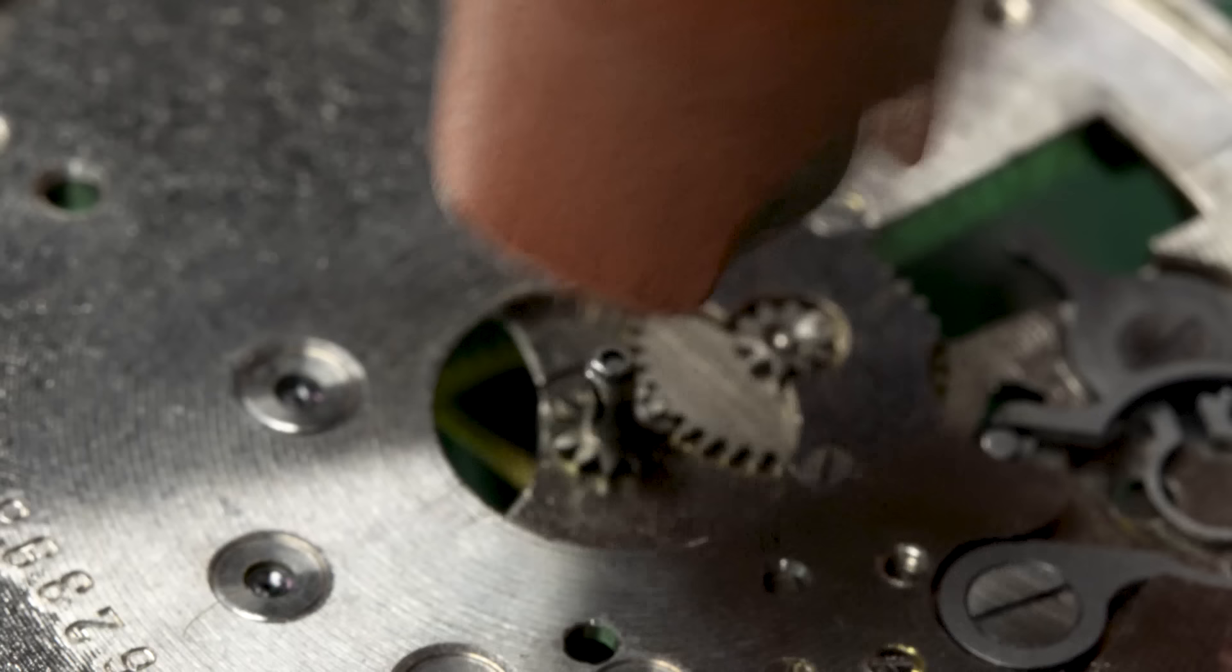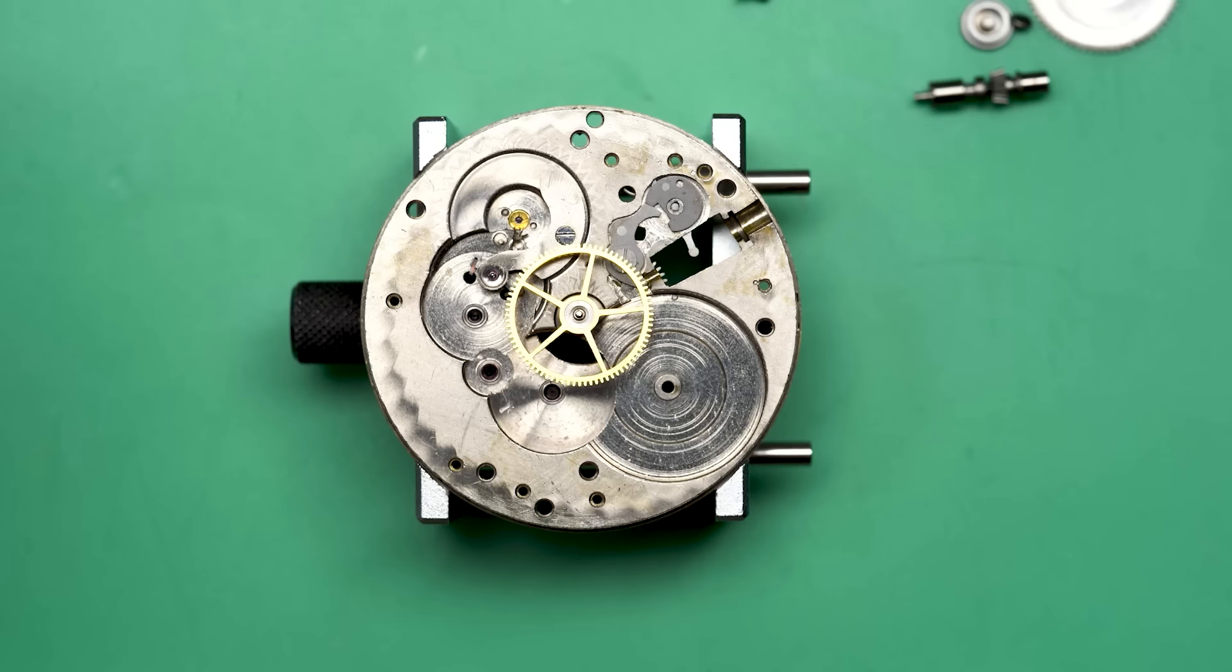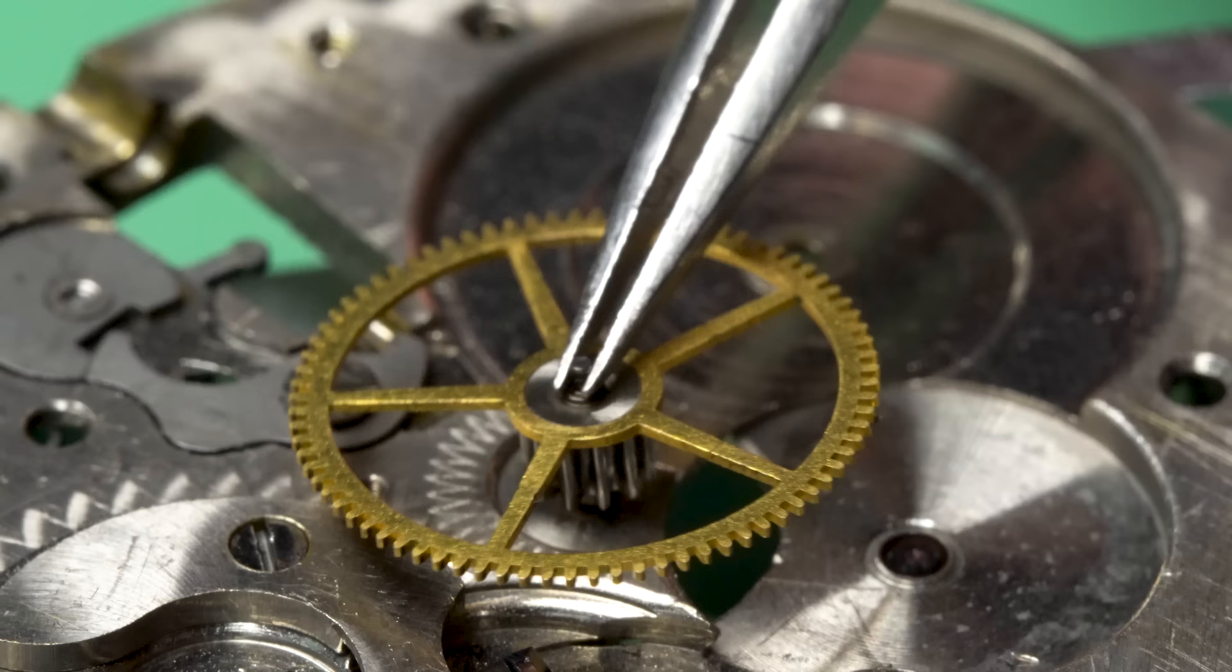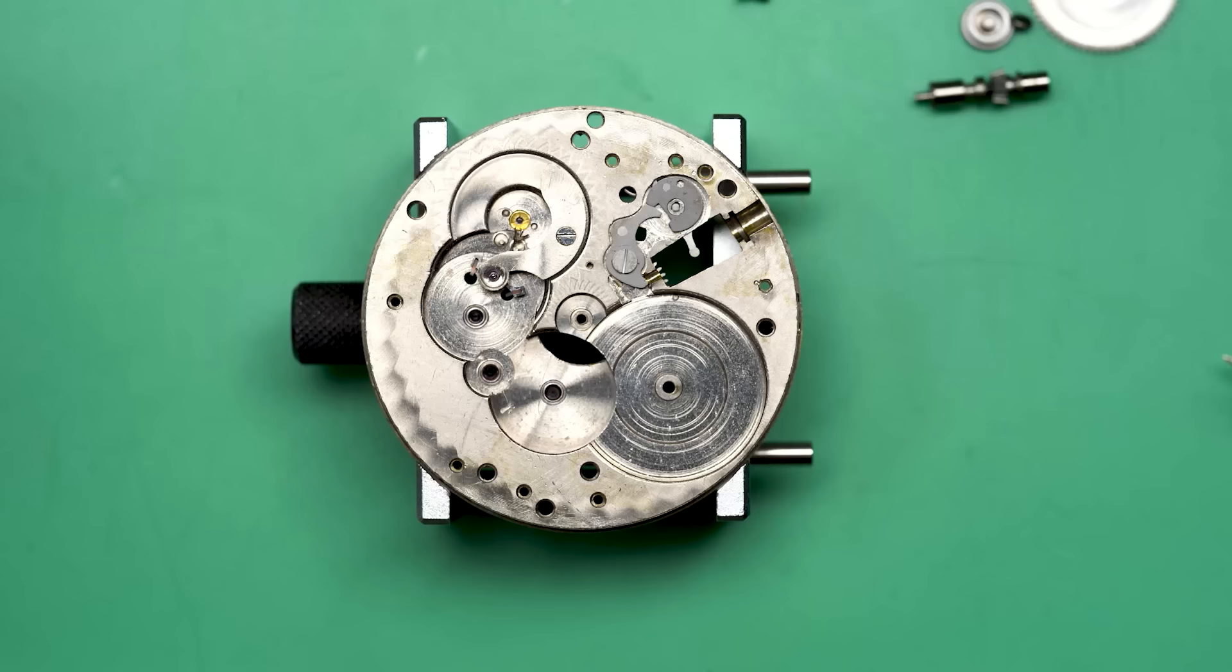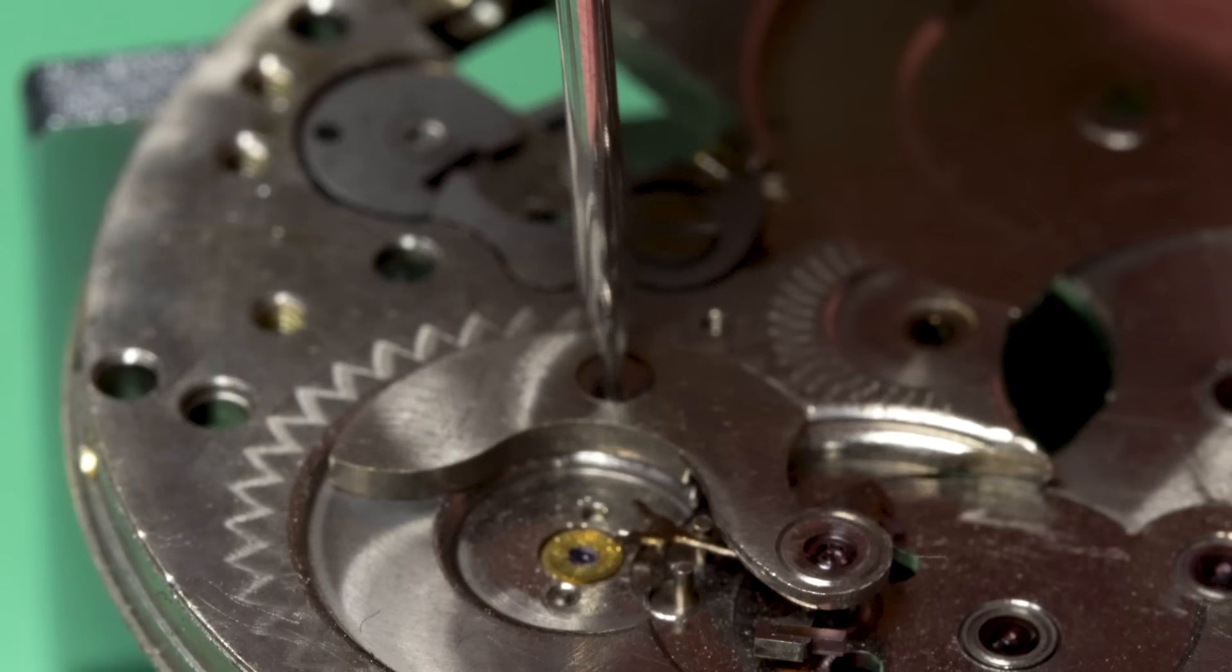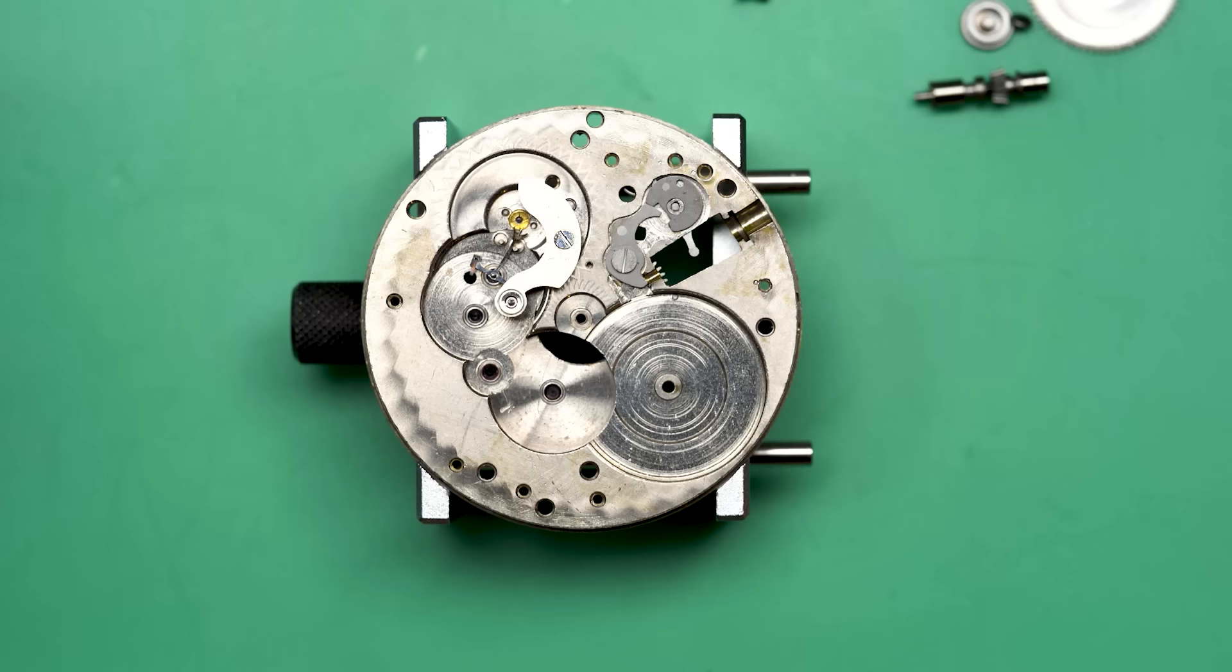You can flip the watch over and take off the cannon pinion with my cannon pinion removal tool. I love this thing. Makes my life very easy. It was well worth the 45 bucks I spent on it. I did have to restore it. It wasn't working very well, but I took it all apart, put some grease in there, made a new thumb grip thing for it. And I've used it ever since.